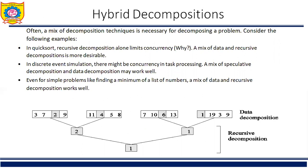We have seen the four decomposition techniques: data decomposition, recursive decomposition, speculative decomposition, and exploratory decomposition. All of these can be combined with each other, and that becomes hybrid decomposition. A mix of decomposition techniques is necessary for decomposing certain problems. For example, in quicksort, recursive decomposition alone limits concurrency, so a mix of data and recursive decomposition is more desirable. In discrete event simulation, a mix of speculative and data decomposition may work well. Even for finding the minimum of a list, a mix of data and recursive decomposition works well.